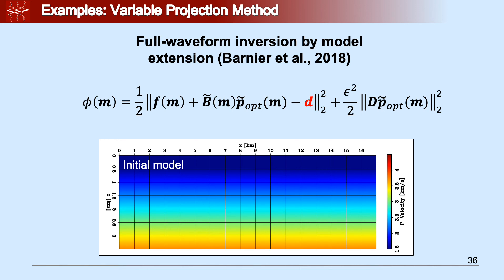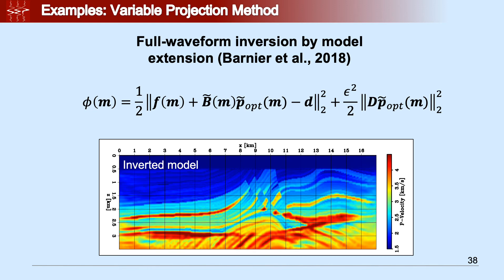D indicates the true data that have been generated using the Marmousi model. So we're going to see the Marmousi model at the end. It does not contain any low frequency or any frequency below 4 Hz. In this problem, we start the inversion using a very naive initial model, which is shown in the bottom, and it's just a V of Z. We ran the inversion, we applied the variable projection implementation that we have, and this is the inverted model that we retrieve.